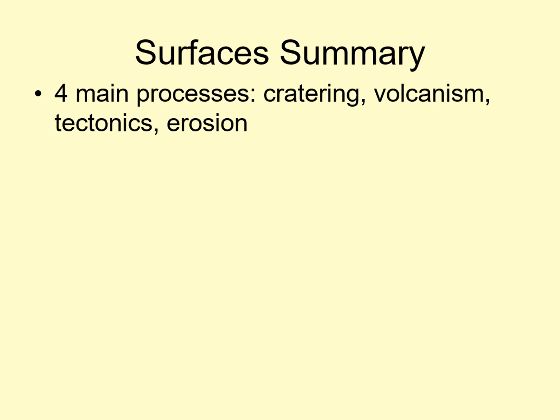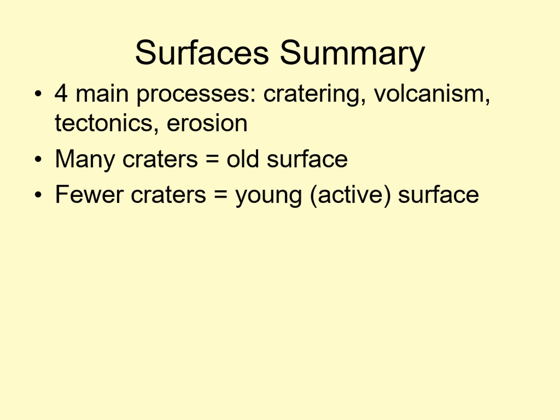We can use the number of impact craters on a surface as a guide to how active the surface is. If there are many craters, then the surface is old and there is very little geologic activity. If there are few craters, then the surface is young and there's a lot more activity. We can extend this idea to piece together the history of a world from the superposition of features on its surface.